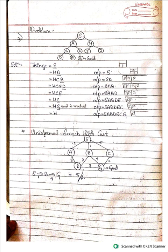Next, let's see the second problem on DFS. S has children A and H. Same way, the fringe initially has S. Who are the children of S? A and H. So first push H into the queue and then A, because it is a last in first out data structure. Now A has children B and C, so first push C then B. A is getting expanded — copy A here, and A is replaced with C and B.